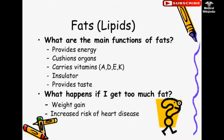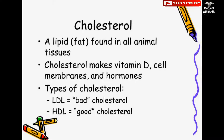Fats and lipids: What are the main functions of fats? Fats provide energy, cushion organs, carry vitamins A, D, E, and K, act as an insulator, and provide taste. What happens if I get too much fat? Weight gain and increased risk of heart disease. Cholesterol is a lipid found in all animal tissues. Cholesterol makes vitamin D, cell membranes, and hormones.